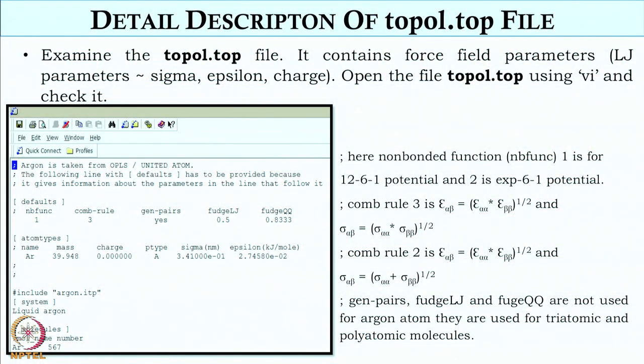The residue name defined here — that is AR — has to be the same throughout: in the PDB file, GRO file, and topology file. If somebody writes 'A' instead of 'AR', it will give an error saying residue name AR not found.